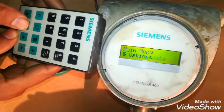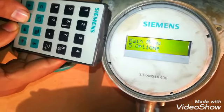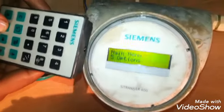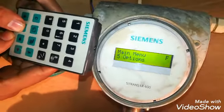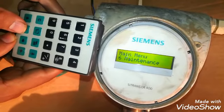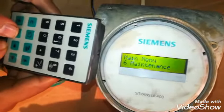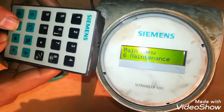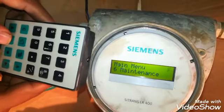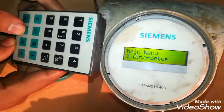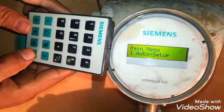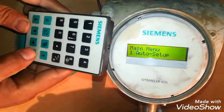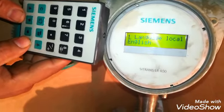Fourth is device data, fifth is options, and the sixth block is maintenance. So I will show you one by one what are the parameters inside this Siemens LR400 radar type level transmitter. This is a non-contact radar level transmitter.